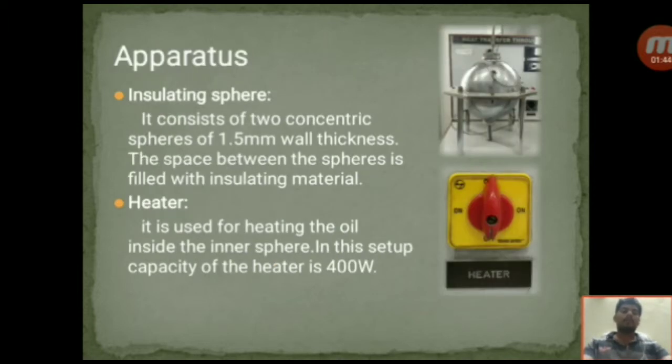Coming to the apparatus: Insulating sphere. The insulating sphere consists of two concentric spheres of 1.5 mm wall thickness. The inner and outer surfaces have 200 mm and 250 mm diameters respectively. The space between the spheres is filled with insulating powder. The inner sphere is filled with oil.